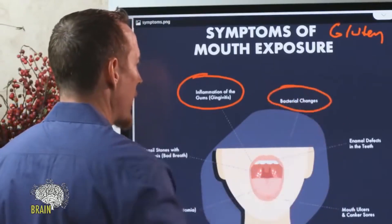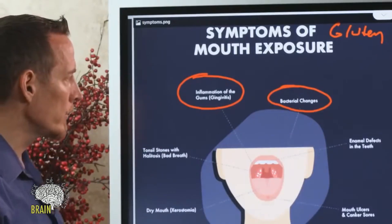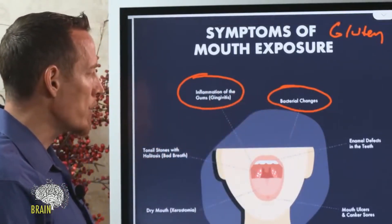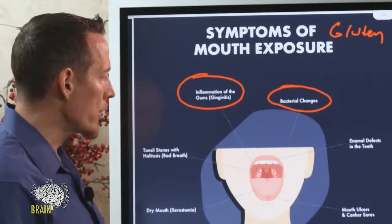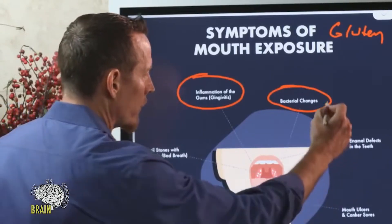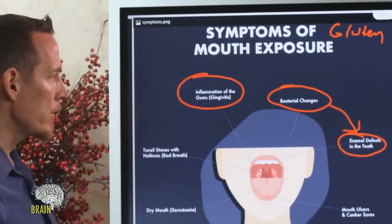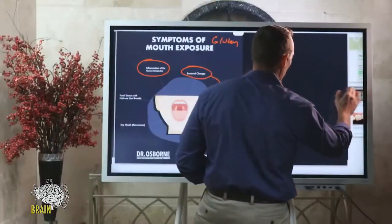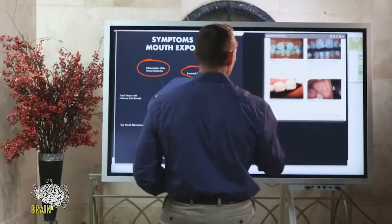Bacterial changes can occur with the consumption of gluten in the mouth, and some of those bacterial changes will dry out the mouth or will start to create problems associated with enamel issues around the teeth as well.